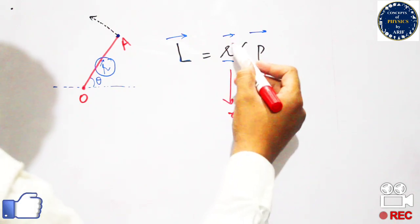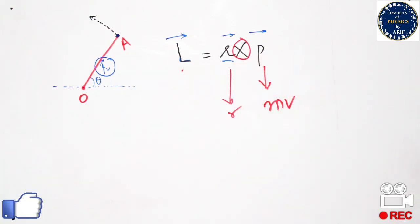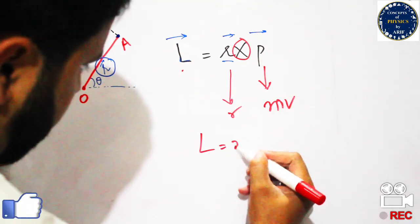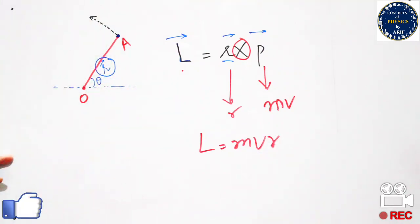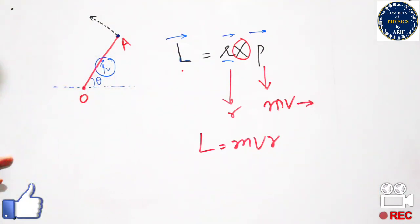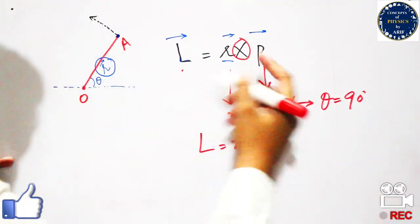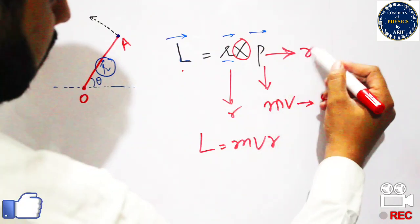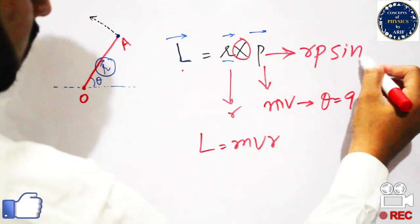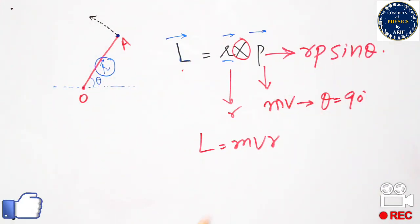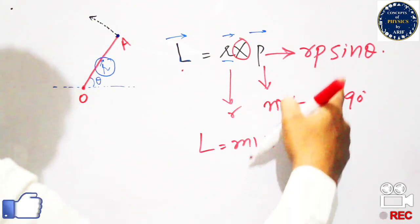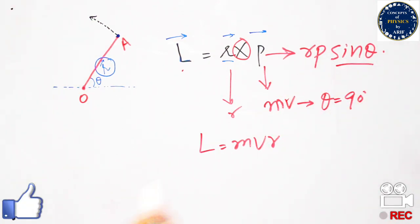To calculate the maximum angular momentum, L equals mvr. Maximum here means the angle theta is equal to 90 degrees, and sine 90 equals one. So if we expand the expression, it becomes r times p times sine theta, and substituting gives us r times p, or mvr.